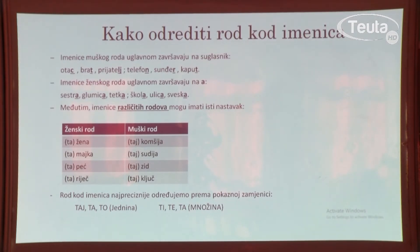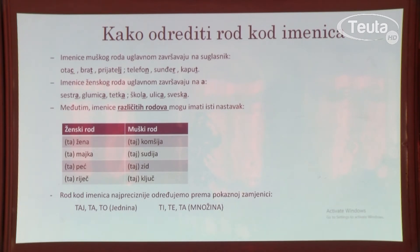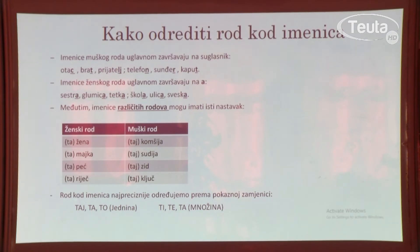Kako odrediti rod kod imenica? Na tabeli su primjeri. Imenice muškog roda u crnogorskom jeziku uglavnom završavaju na suglasnik: otac, brat, prijatelj, telefon, sunđer, kaput. Imenice ženskog roda uglavnom završavaju na vokal A: sestra, glumica, tetka, škola, ulica, sveska.